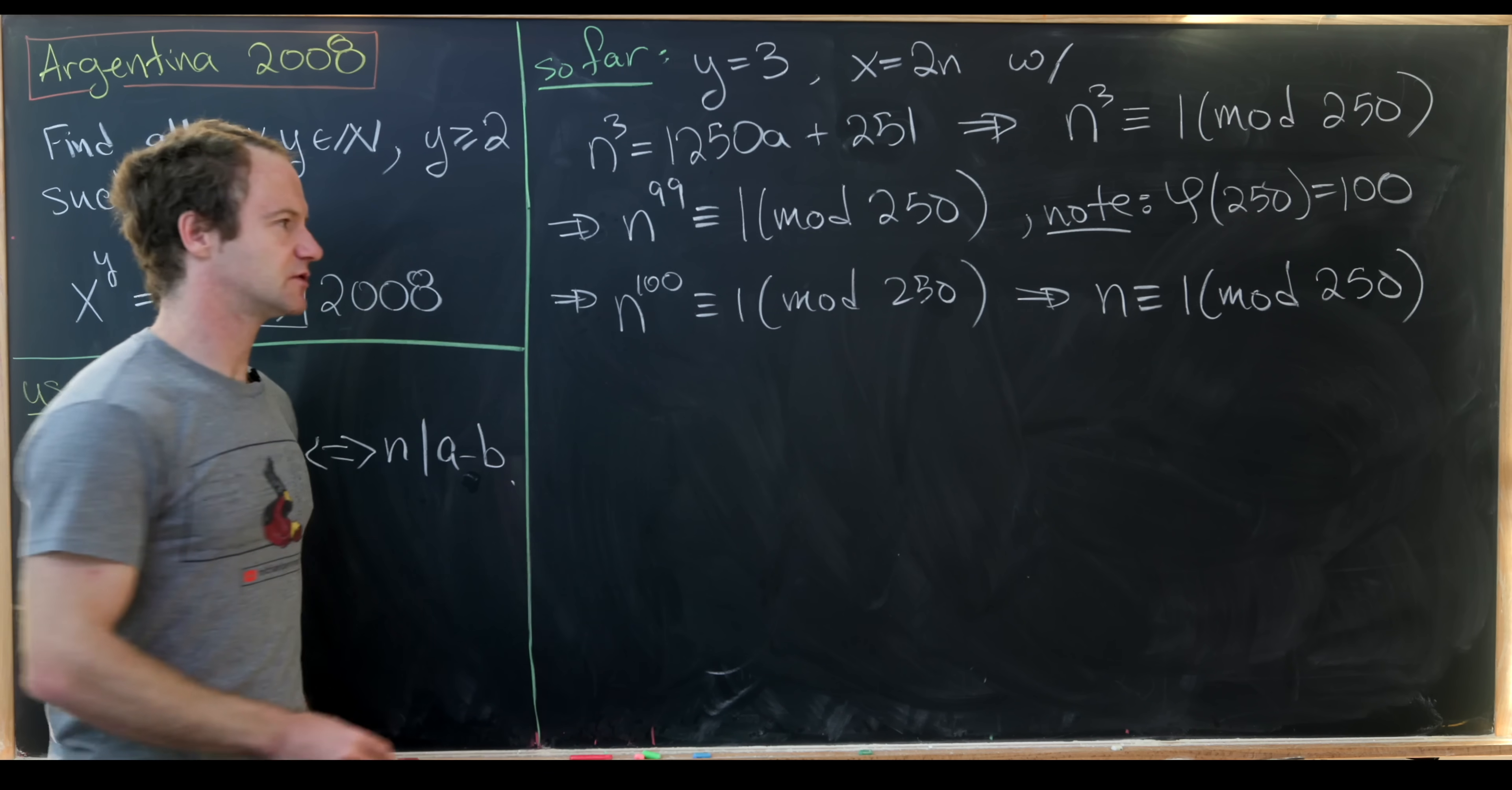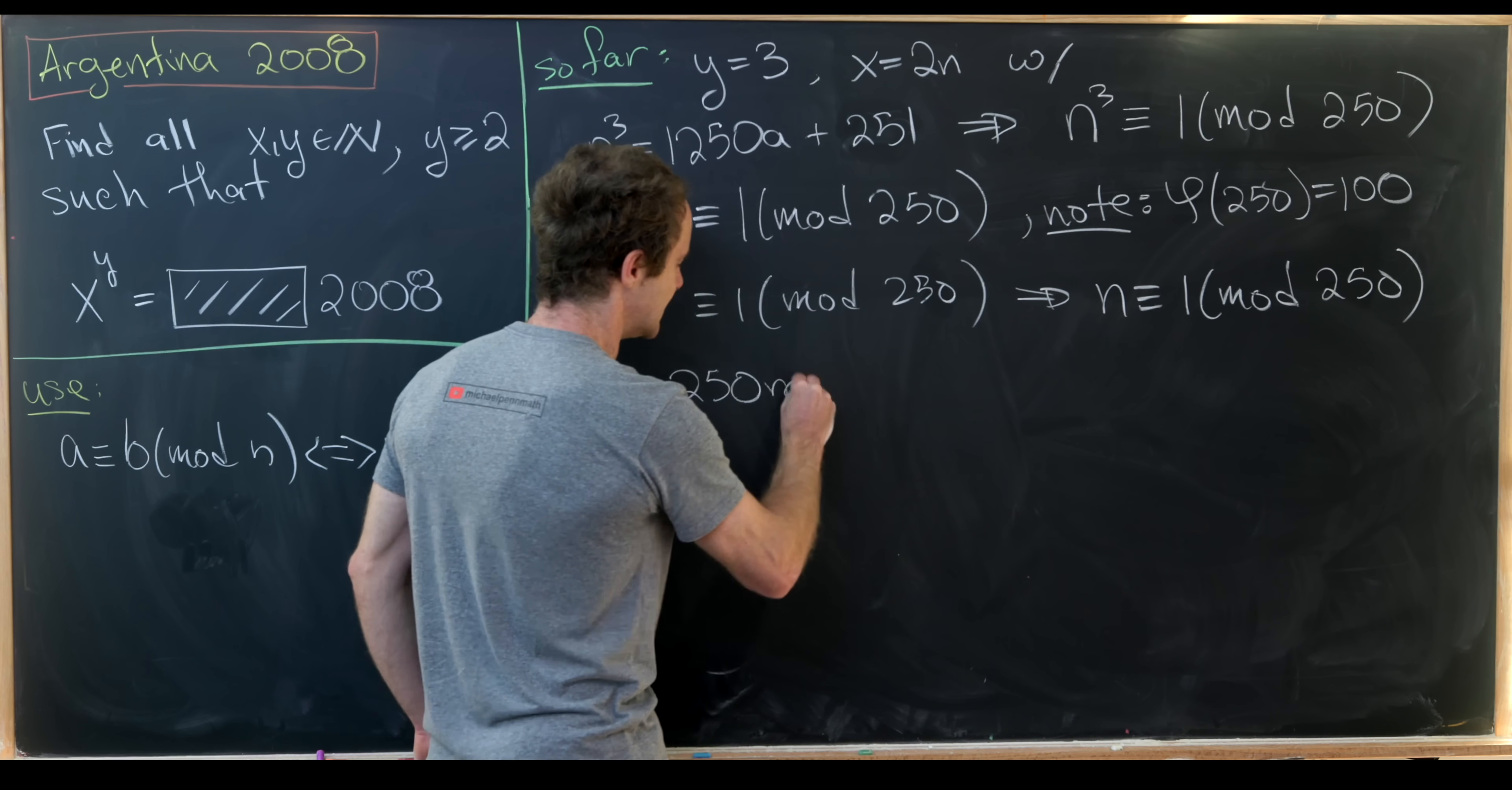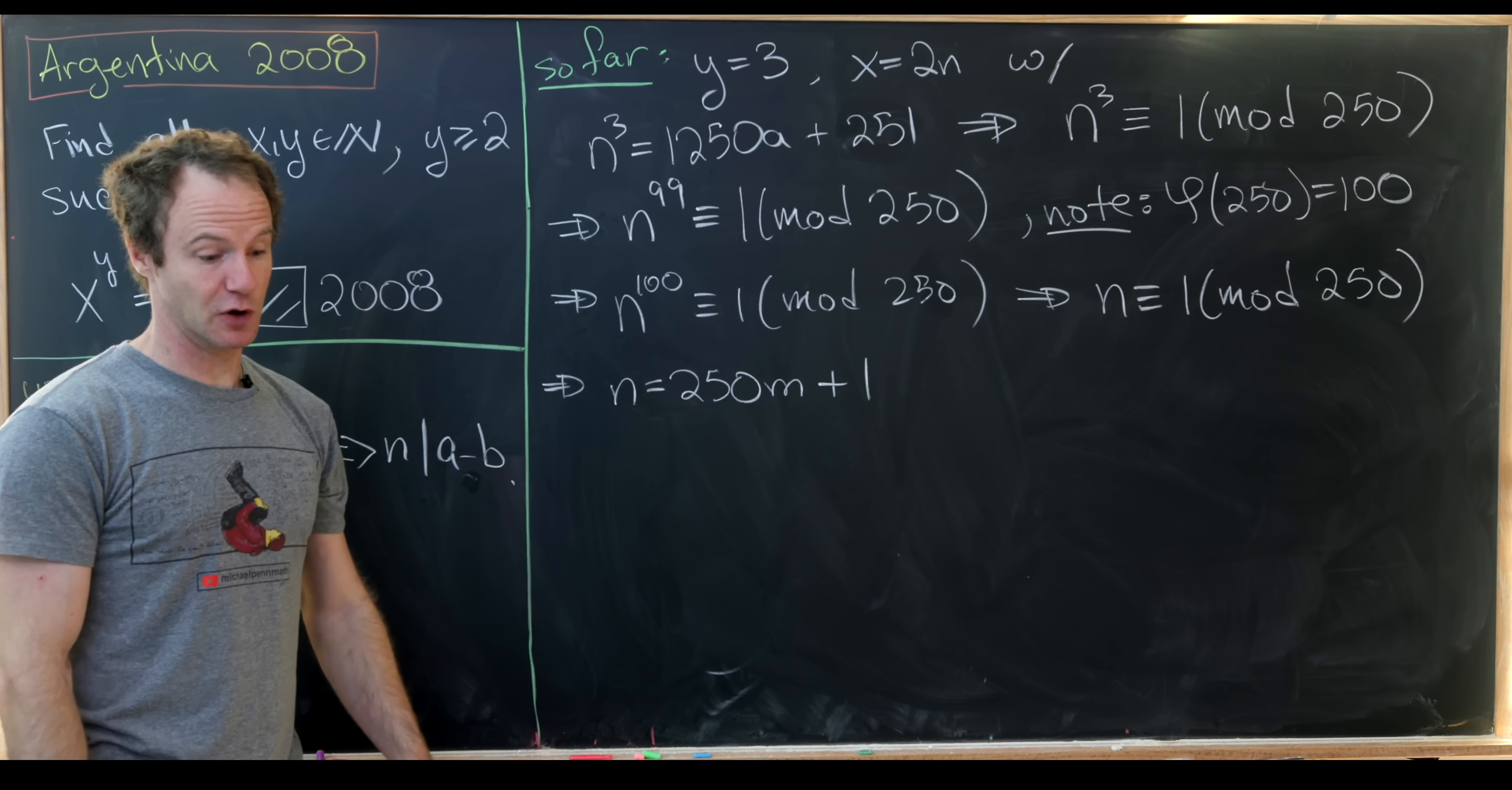But if n is congruent to 1 mod 250 that means we can write n as 250 times m plus 1. So we've got a nice format of n at the moment.